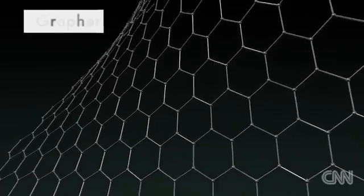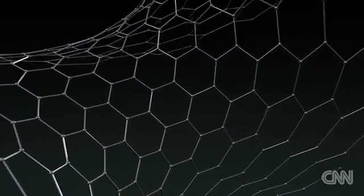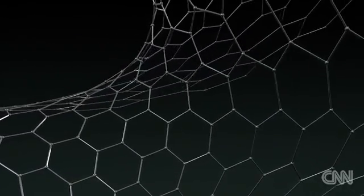What if I told you there was one substance that could make all of this possible? This is graphene, the miracle material of the future. Scientists say it's the thinnest, lightest, and strongest stable material known on Earth.